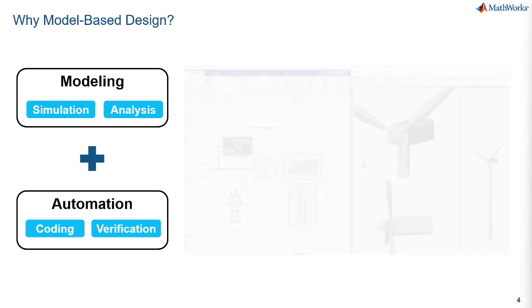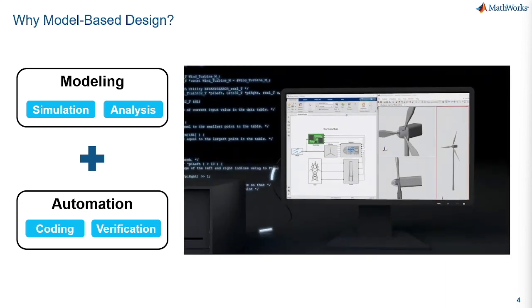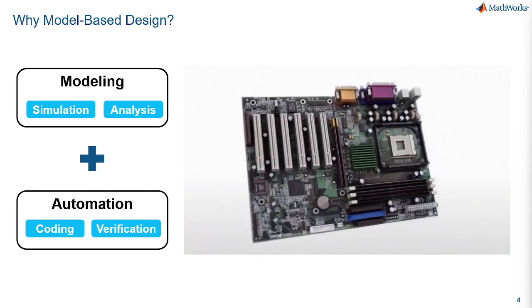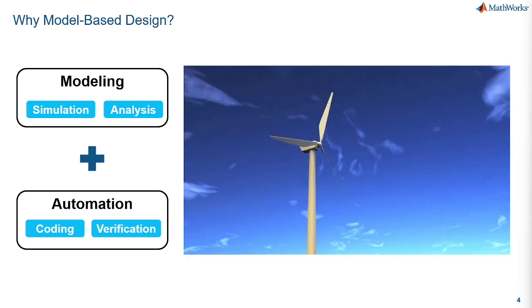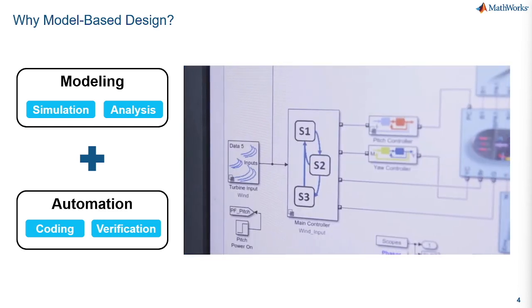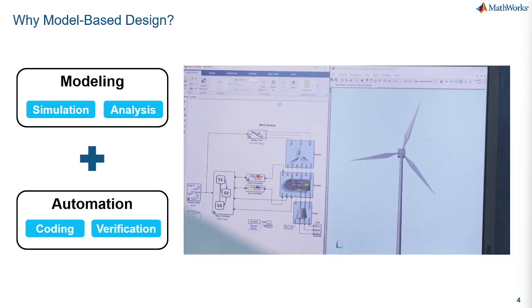With Simulink you can automatically generate code from your system's model instead of writing thousands of lines of code by hand. The C and HDL code that you generate is production quality, fully traceable to your design, and behaves the same way as the model.